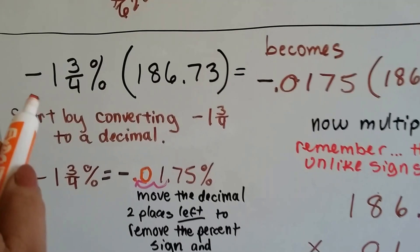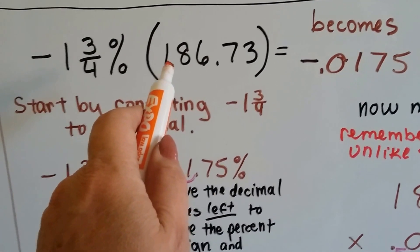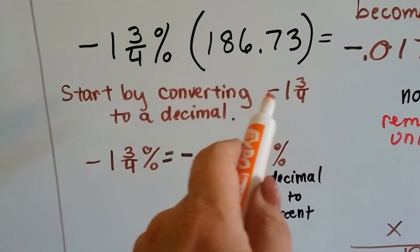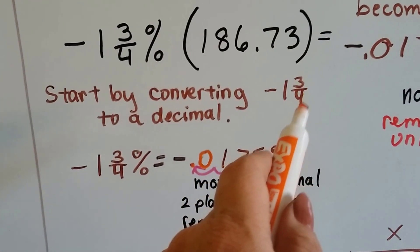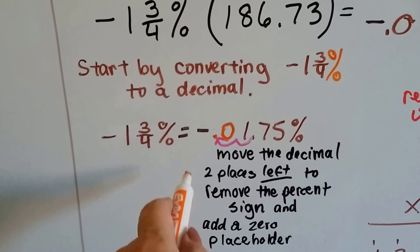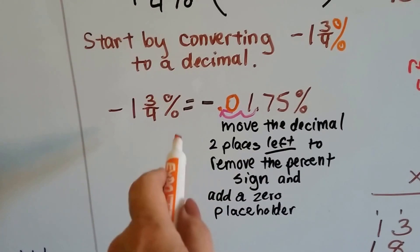Alright. Now, what if we have negative one and three-fourths percent multiplied to 186.73? Well, we start by converting that negative one and three-fourths percent to a decimal. And what we do is, we move the decimal two places to the left.